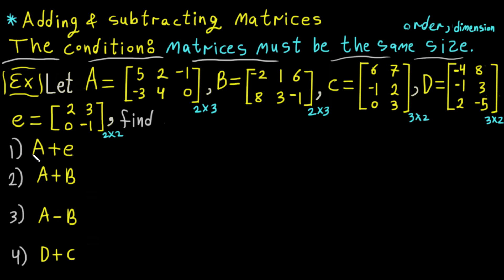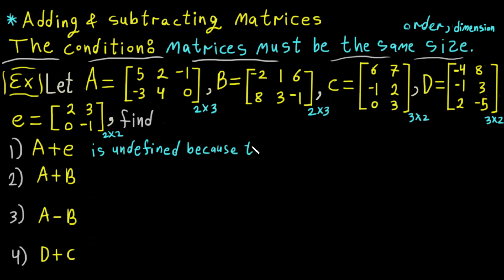The first question is A plus E. The size of A is two by three and the size of E is two by two. The rows are equal but the columns are not equal, so it is undefined because it does not satisfy the condition. We write: A plus E is undefined, because the size of A does not equal the size of E.